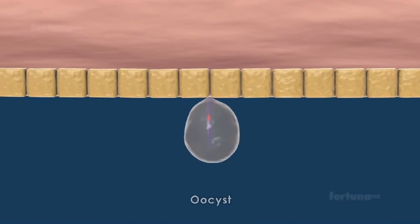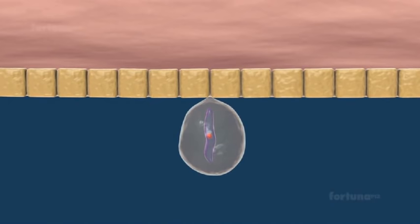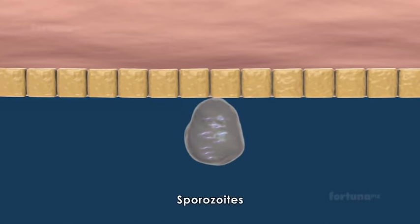A cyst known as an Oocyst will form on the Ookinete. Inside the Oocyst, the Ookinete will divide asexually to produce the infective spindle-shaped Sporozoites.